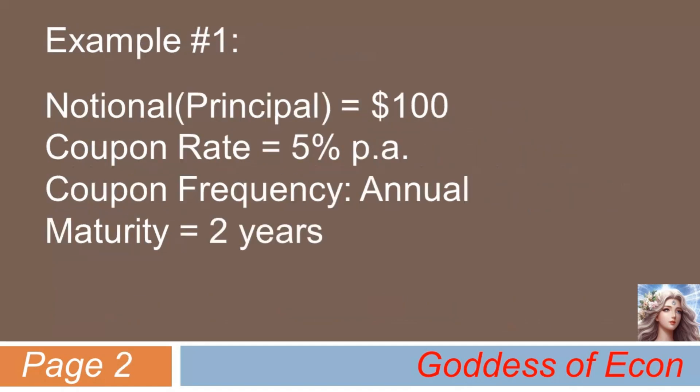Let's look at the following example. Let's assume a bond with notional principal amount of $100, 5% coupon, with yearly payments, and maturity of 2 years. In this case, what would the cash flows from the bond look like? Well, in year 1 it pays $5, which is the coupon amount. Then in year 2, it pays $5, the coupon amount, along with $100, which is the principal amount. Simple, isn't it?